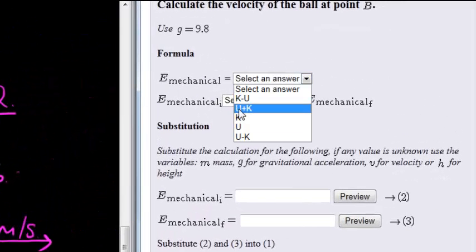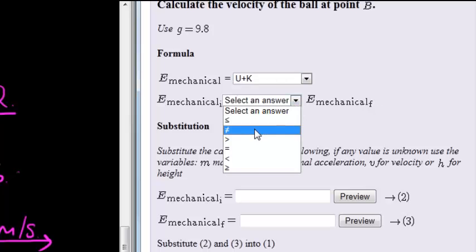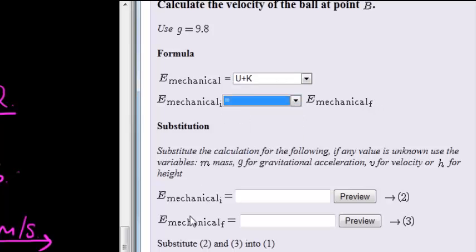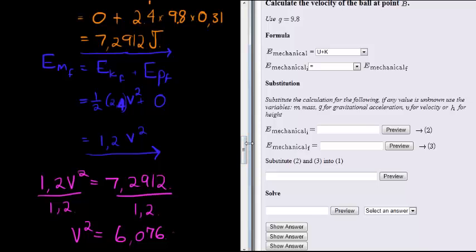Let's fill it in here. We know that the formula says mechanical energy is that potential plus kinetic energy. That initial mechanical energy is equal to final mechanical energy, they're equal.